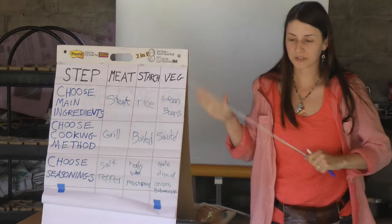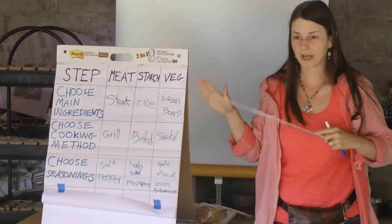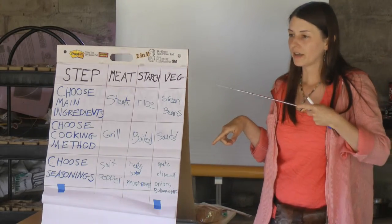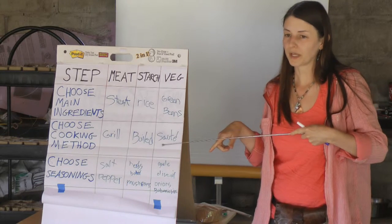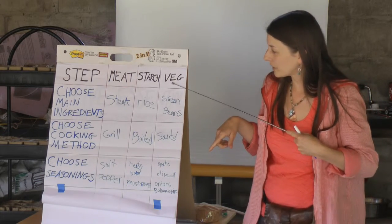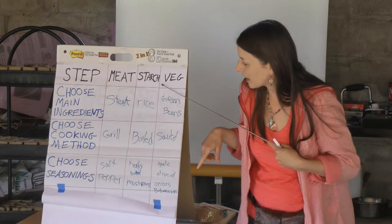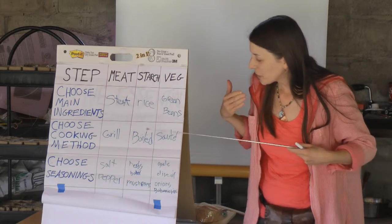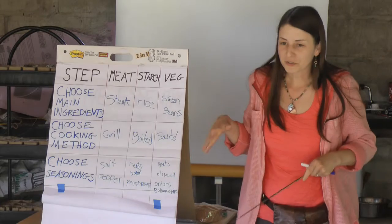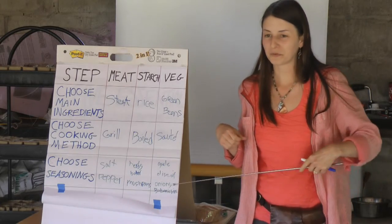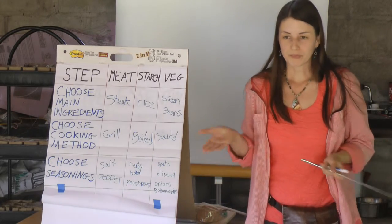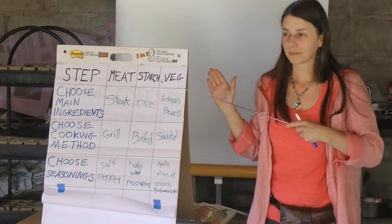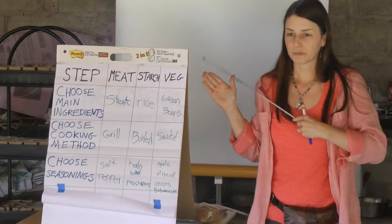So this exercise is just to illustrate the process of designing from patterns to detail. We got the really high-level pattern, and with each level of detail we went a little deeper. So now we don't just have meat, starch, and vegetables — we have grilled steak with salt and pepper, rice with herbs and mushrooms. This is the stuff that goes on the menu, the whole dish. A high-level example of designing from patterns to detail.